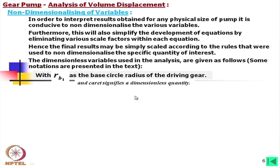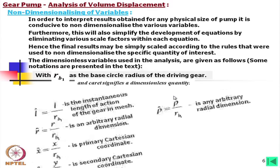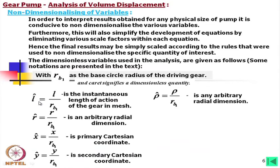Now, L is the instantaneous length of action of the gear in mesh — I will explain this again with a figure of the gears. The non-dimensional form uses a caret or hat symbol. So L̂ = L / R_B1 is the non-dimensional parameter. Similarly, R is an arbitrary radial dimension, also divided by the same base circle radius R_B1. In this way, the Cartesian coordinates x and y are also non-dimensionalized.